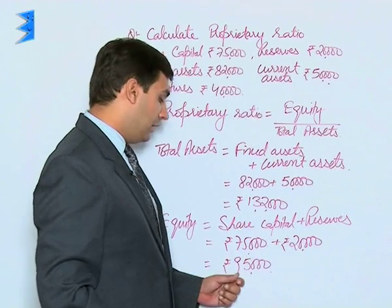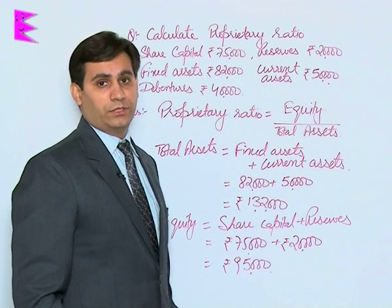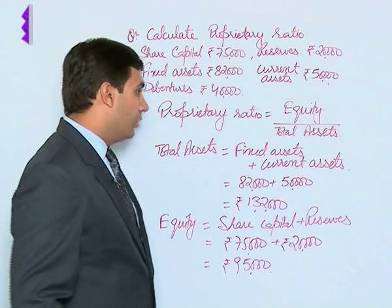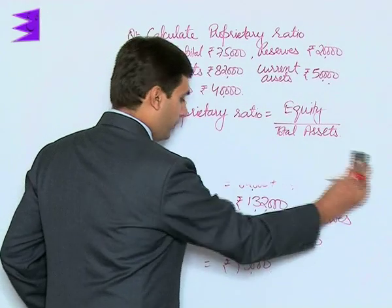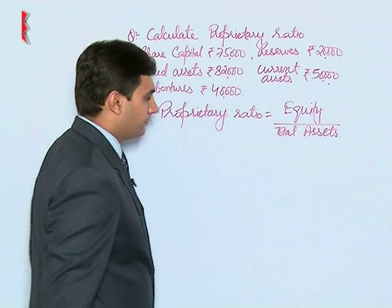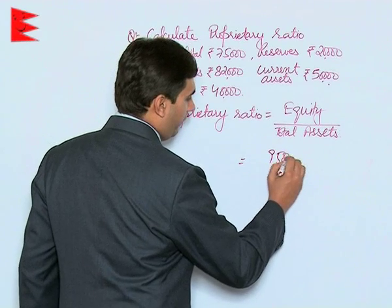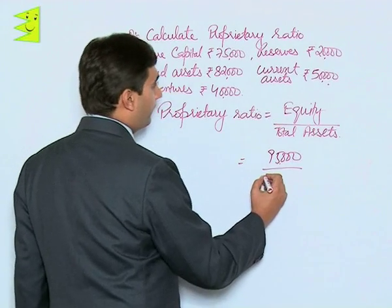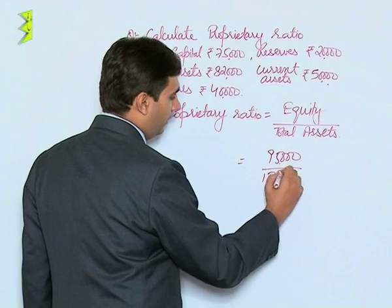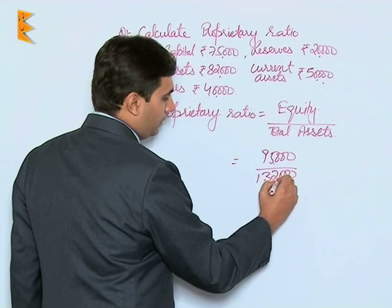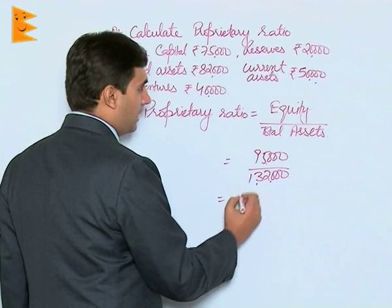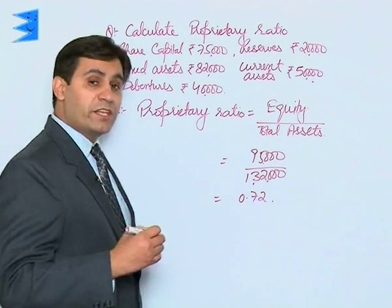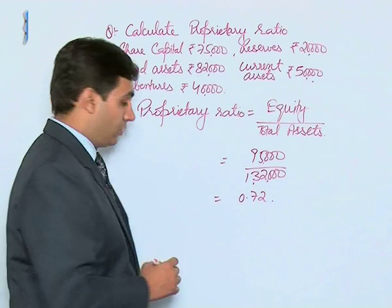Now we have both components: total assets are equal to one lakh thirty-two thousand and equity is equal to ninety-five thousand. Let us use these two figures to calculate the proprietary ratio. Proprietary ratio equals equity — that is ninety-five thousand — divided by total assets, which is fixed assets plus current assets, that is one lakh thirty-two thousand.